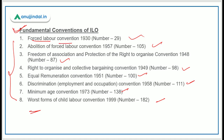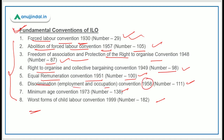The 8 ILO fundamental conventions are: Forced Labour Convention 1930, Number 29; Abolition of Forced Labour Convention 1957, Number 105; Freedom of Association and Protection of the Right to Organize Convention 1948, Number 87; Right to Organize and Collective Bargaining Convention 1949, Number 98; Equal Remuneration Convention 1951, Number 100; Discrimination (Employment and Occupation) Convention 1958, Number 111; Minimum Age Convention 1973, Number 138; and Worst Forms of Child Labour Convention 1999, Number 182.